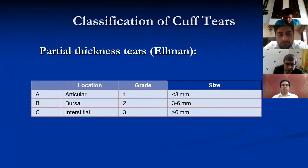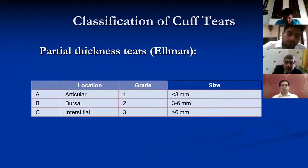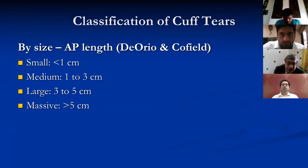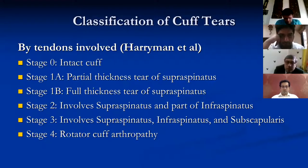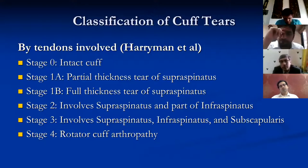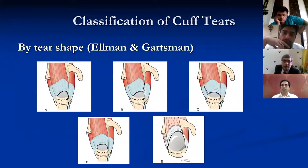Partial thickness tears are classified depending on whether they are articular, bursal, or interstitial, and also by size: less than 3mm, 3 to 6mm, or more than 6mm. Importantly, whether they are less than 50% or more than 50% of the tendon thickness. For full thickness tears, by size: less than 1cm is small, 1 to 3cm is medium, 3 to 5cm is large, and more than 5cm is massive. The spectrum progresses from partial thickness tear all the way to rotator cuff arthropathy. The shape of the tear is important: classically we have V-shaped, L-shaped, reverse L-shaped, U-shaped, and large retracted tears.